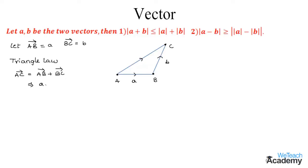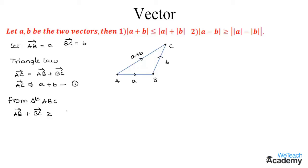Substituting, we get a + b as the value of vector AC. So the length of vector AC is a + b — let us name this equation one. From triangle ABC, we can conclude that vector AB + vector BC must be greater than or equal to the length of vector AC. This can also be written as vector AC ≤ vector AB + vector BC. Substituting the values of AB and BC, and using equation one, we get: a + b ≤ a + b.